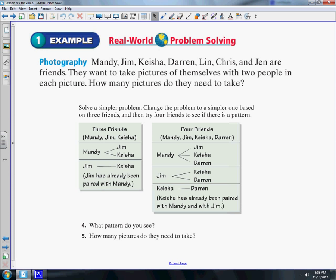To get your mind around this topic, solve a simpler problem. Change the problem to one that only has three friends. They picked Mandy, Jim, and Keisha. You can take a picture of Mandy with Jim and with Keisha, and then all you need left is a picture of Jim and Keisha. Jim has already been paired with Mandy. So that would be three pictures for three people.